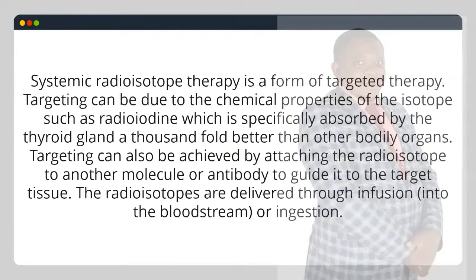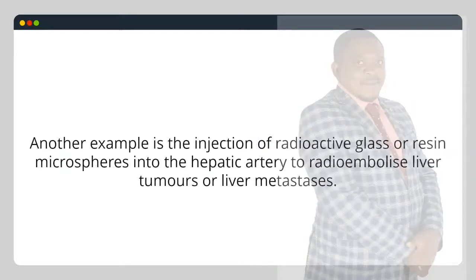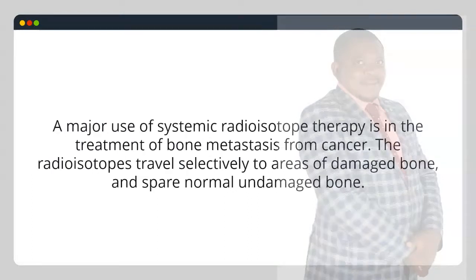3. Radioisotope therapy (RIT). Systemic radioisotope therapy is a form of targeted therapy. Targeting can be due to the chemical properties of the isotope, such as radioiodine which is specifically absorbed by the thyroid gland a thousand-fold better than other bodily organs. Targeting can also be achieved by attaching the radioisotope to a molecular antibody to guide it to the target tissue. The radioisotopes are delivered through infusion into the bloodstream or ingestion. Examples include infusion of metaiodobenzylguanidine (MIBG) to treat neuroblastoma, oral iodine-131 to treat thyroid cancer or thyrotoxicosis, and hormone-bound lutetium-177 and yttrium to treat neuroendocrine tumors (peptide receptor radionuclide therapy). Another example is injection of radioactive glass or resin microspheres into the hepatic artery to radioembolize liver tumors. A major use is in the treatment of bone metastasis; the radioisotopes travel selectively to areas of damaged bone and spare normal undamaged bone.